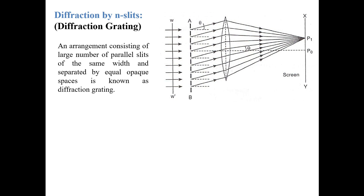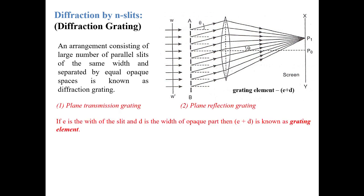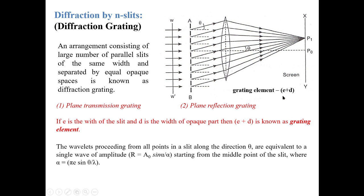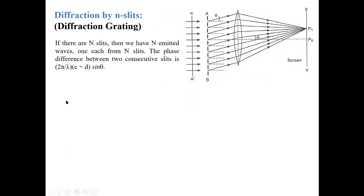A grating is an arrangement consisting of a large number of parallel slits of the same width separated by equal opaque spaces. Gratings are of two kinds: plane transmission grating and plane reflection grating. In the reflection grating, the light incident on the grating is reflected back. The wavelets proceeding from all points in a slit along the direction θ are equivalent to a single wave of amplitude R starting from the middle point of the slit.